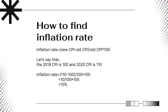Here, 110 is the CPI of 2020 and 100 is the CPI of 2019. So it's 10 divided by 100, multiplied by 100, which results in an inflation rate of 10%.